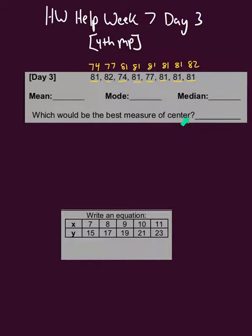Then I have to decide which would be the best measure of center. So first let's start with mean. Remember, mean means add and divide the numbers by however many you added. So I already have them added up and they add up to 638, and then I'm going to divide by eight because there are eight numbers. If I do that I get 79.75 - that's my mean.